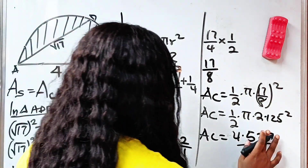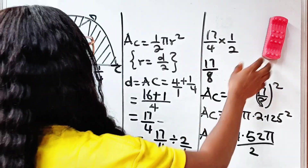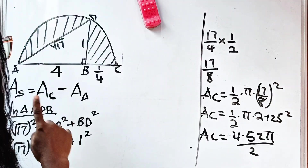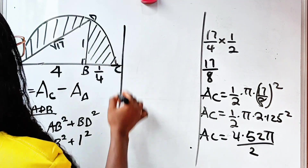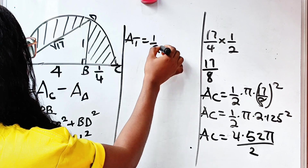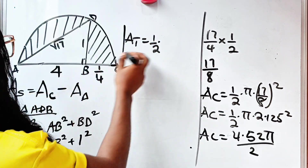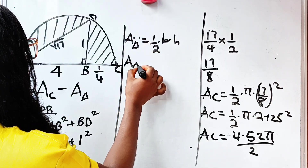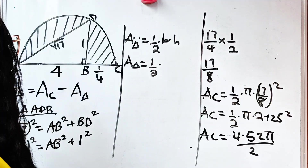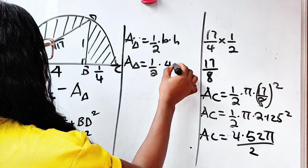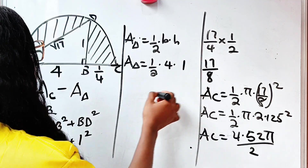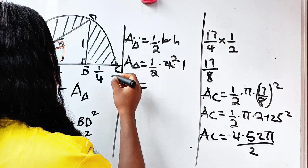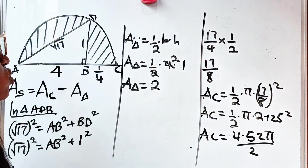Now let's find the area of the triangle, which is straightforward. Area of triangle = ½ × base × height. The base is AB = 4 and the height is BD = 1. So area of the triangle = ½ × 4 × 1 = 2 units squared.